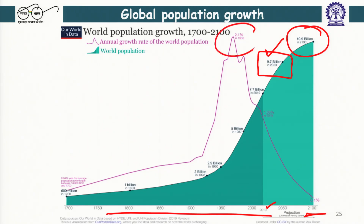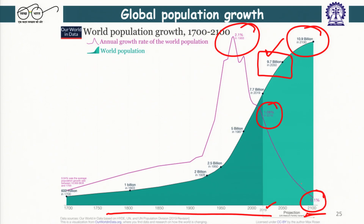If you look at the growth rate, we had the highest growth rate of 2.1 percent in 1968, and then we are going to see a dip. Right now, in 2019–2020, we are at 1.08 percent global growth rate. Some countries like Australia are growing slightly faster at around 1.16 percent. By 2100 we are projected to see a dip to around 0.1 percent, which will be even closer to what we had in 1700. The growth rate will reach that level and we will have some sort of equilibrium by that time.